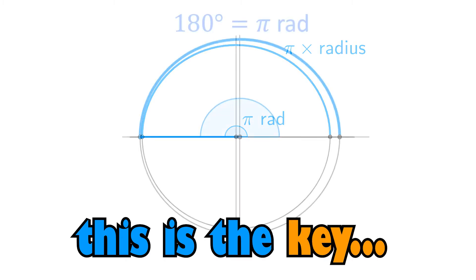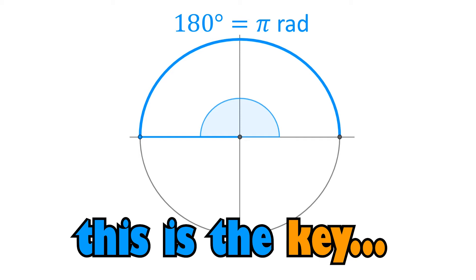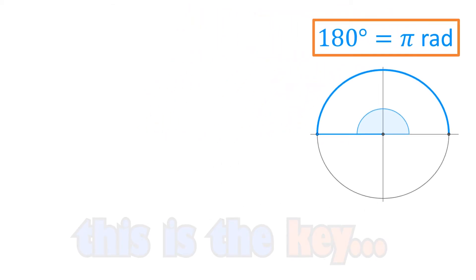180 degrees is π radians. π radians is 180 degrees.